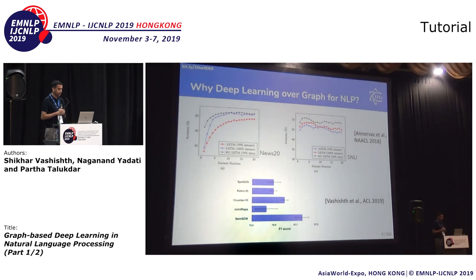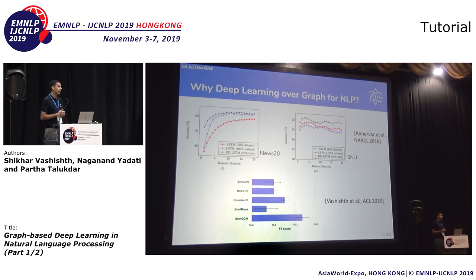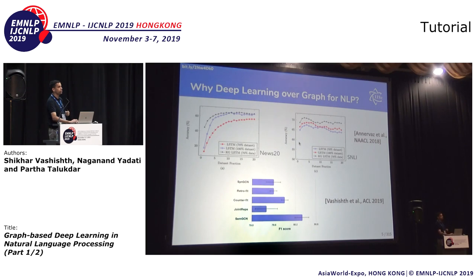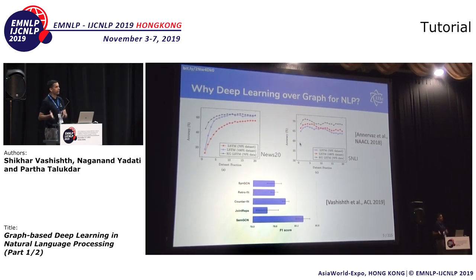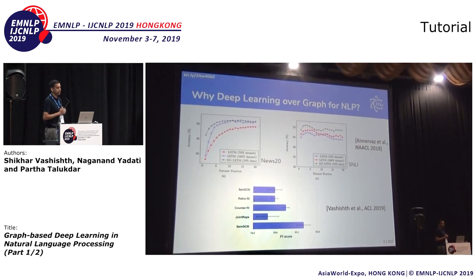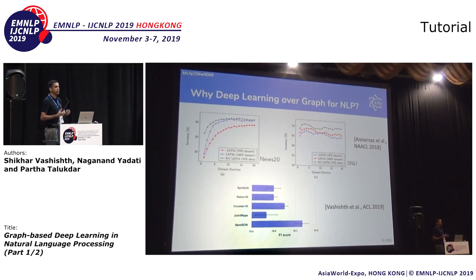Similarly, in Vashist et al.'s work from ACL 2019, focused on improving word embeddings, if you augment word embedding models with external information such as different semantic relationships that exist among words — say synonymy, antonymy, or other types of more complex relationships — they show that you actually learn better word embeddings, which in turn helps in downstream tasks. There is increasingly more evidence that if you handle deep learning models in conjunction with graphs in some principled way, there are improvements to be had at the end of the day.